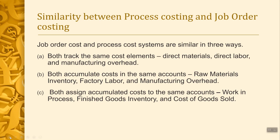Process costing and job order costing are very similar in three ways. In chapter 2 we talked about job order costing as a system of costing, and now we are comparing the two. The manufacturing cost component is one way in which they are very similar — they both track the same cost elements: direct material, direct labor, and manufacturing overhead. Another area where they are similar is the accumulation of materials, labor, and overhead; they both accumulate costs in the same accounts.